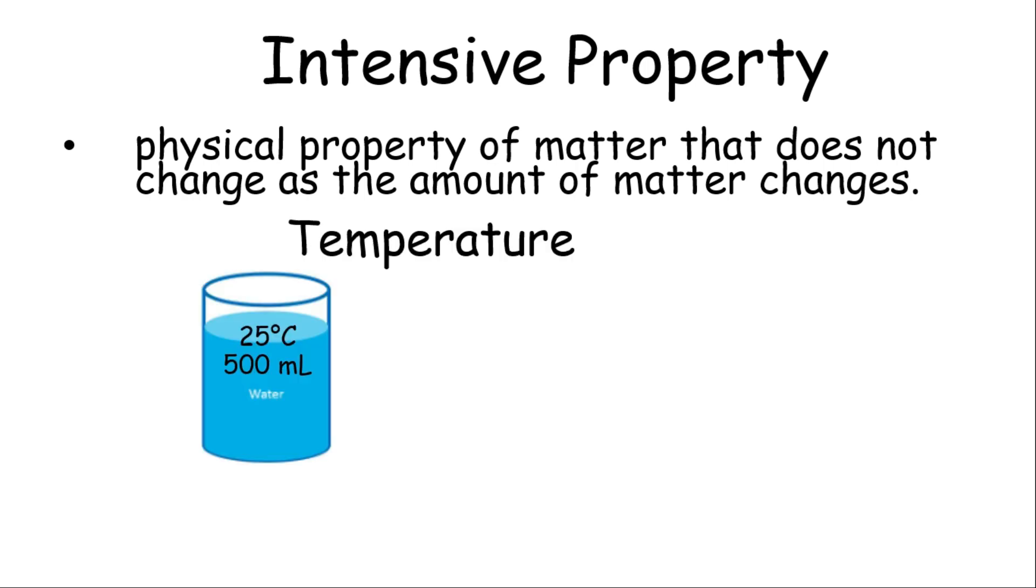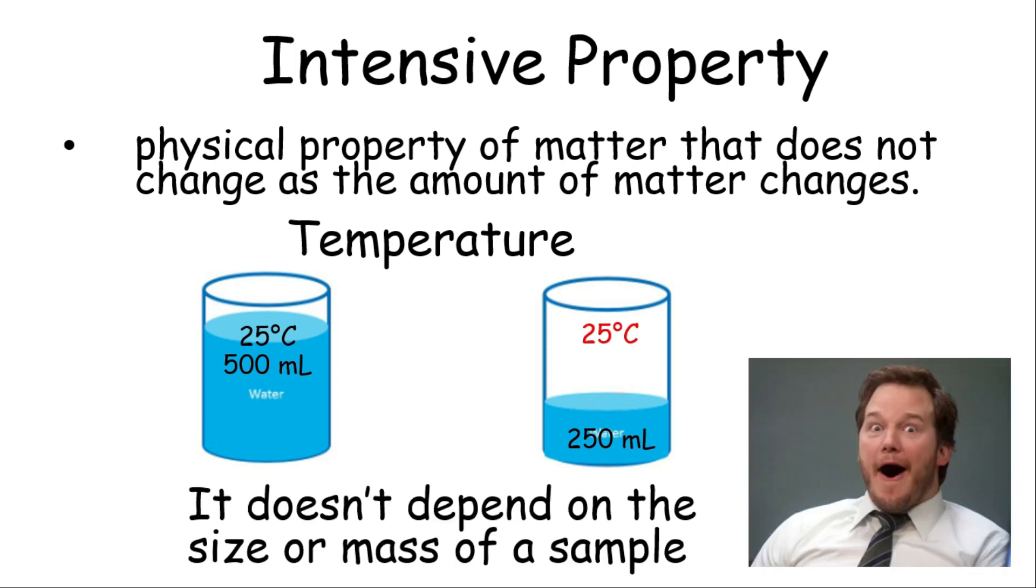So for example, temperature. Let's say I have 500 milliliters of 25 degrees Celsius of water. Now, I decided to transfer half of it into another beaker. So I will have 250 ml, but the temperature is still 25 degrees Celsius. Therefore, the temperature doesn't depend on the size or mass of a sample.